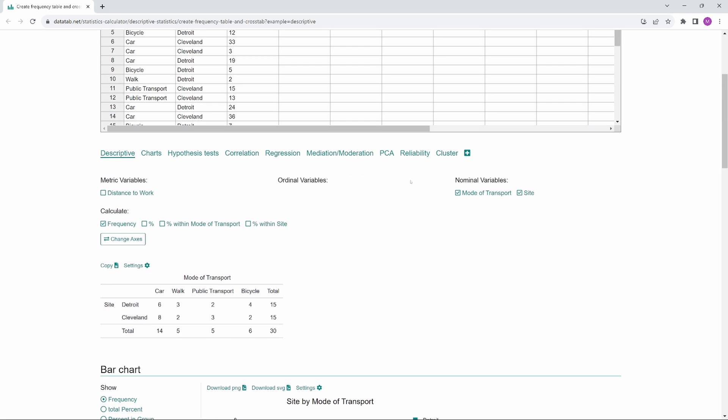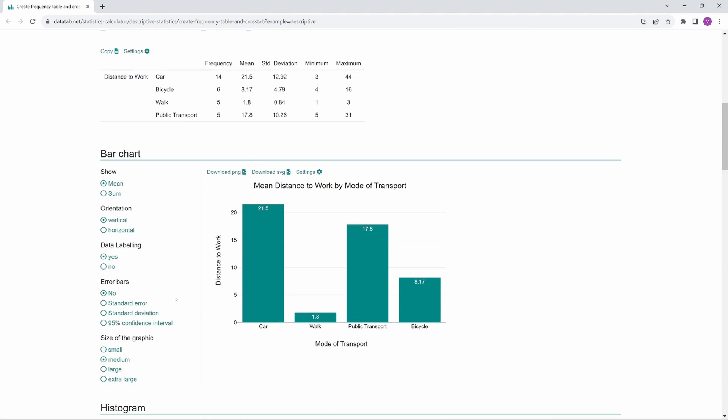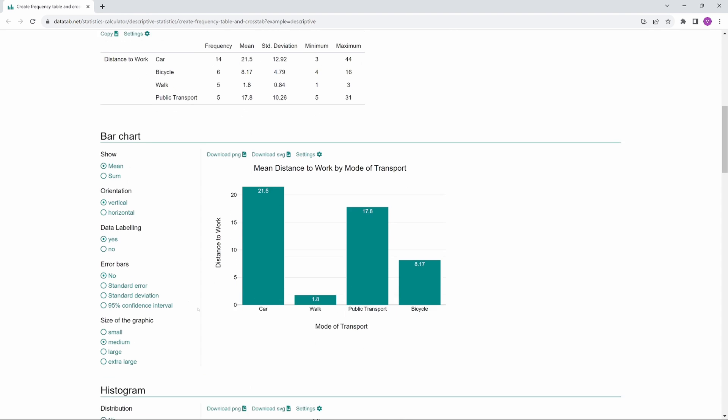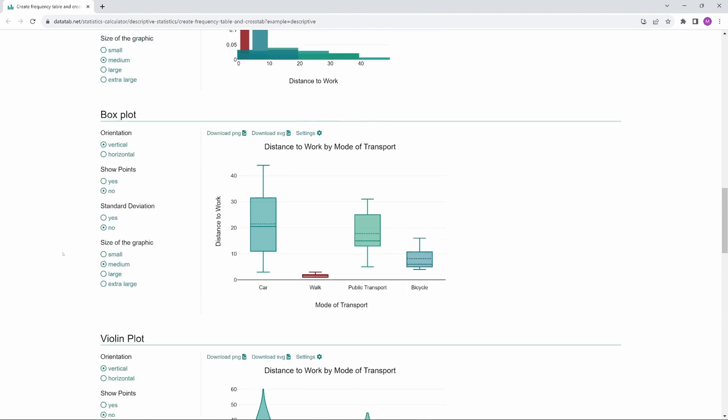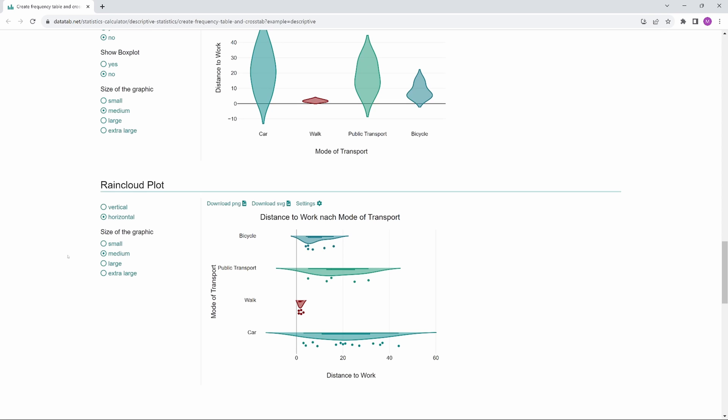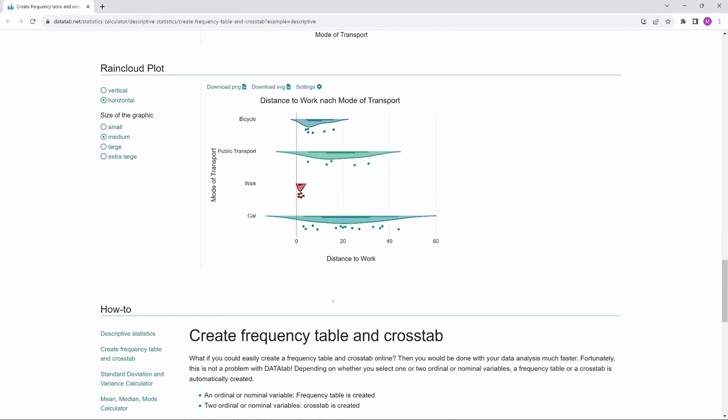If we click on distance to work and mode of transport, we get a bar chart where the height of the bars shows the mean values of the individual groups. Here we can also display their dispersion. We also get a histogram, a box plot, a violin plot, and a rainbow plot. If you would like to know more about what a box plot, a violin plot, and a rainbow plot are, take a look at my videos. I hope you enjoyed the video.